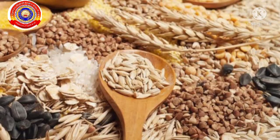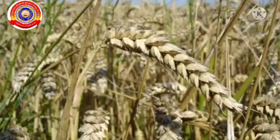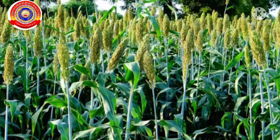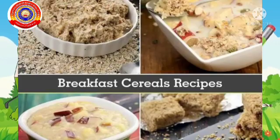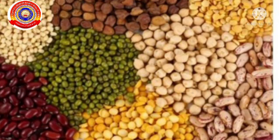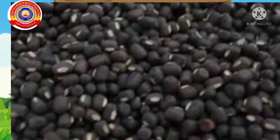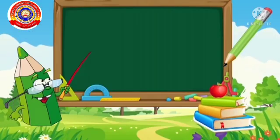My dear children, did you know what is this? These are cereals. We get cereals from plants like paddy, wheat, jowar, and maize. We use these cereals for making food items. And we also get pulses like green gram, red gram, black gram, etc. from plants.